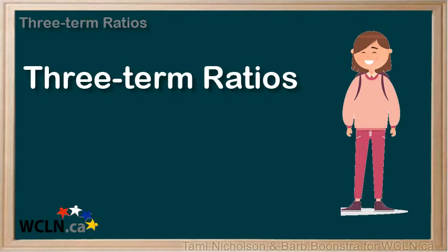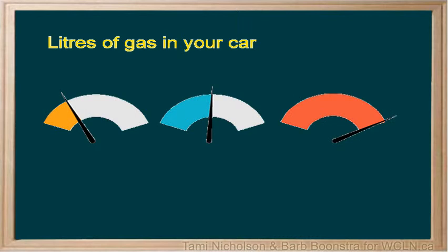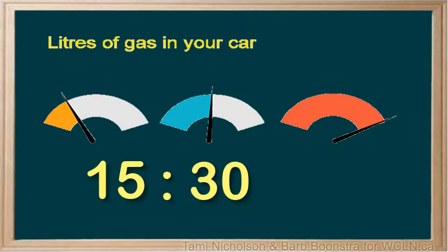A three-term ratio compares three quantities. One example is 2 to 4 to 5. Three-term ratios must be measured in the same units. You can compare the number of liters shown in the picture as 15 to 30 to 60, because each gauge is measuring the amount in liters.